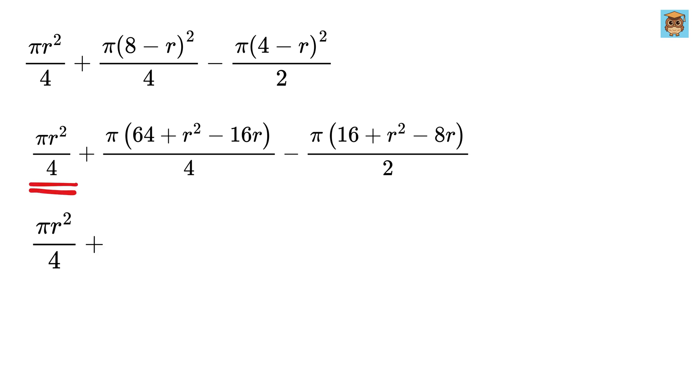So again, write this as it is. Then this will be 64 over 4, or 16 pi. And then this will be pi r square over 4. Then this will be minus 4 pi r.